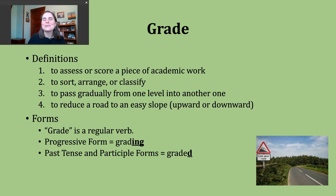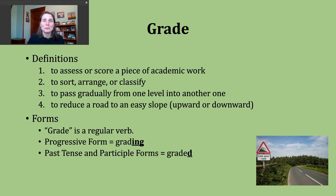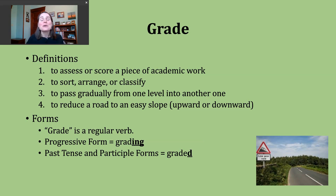Grade is a regular verb. To make the progressive form, you're going to drop the E on the end — because this verb ends with vowel-consonant-E — forming grading after we add that suffix. The past tense and participle forms can be made by just adding D, since the verb already ends in E. However, the ending sound of the base verb grade is a D — a consonant sound. D and T sounds are always special, so when we add ED to words ending with those two sounds, we add an extra syllable. So we pronounce the past tense as graded.